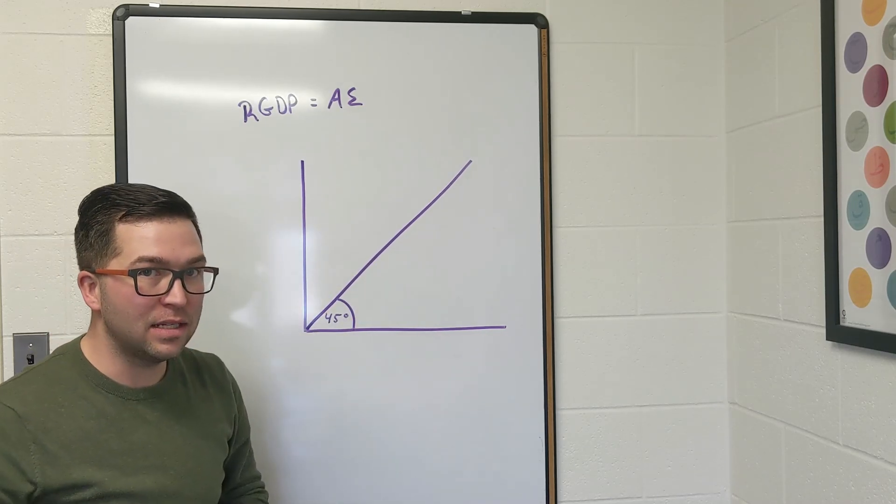As a quick review, remember the macroeconomic equilibrium is when we have real GDP equal to aggregate expenditure. The great thing about the 45-degree line is that this splits the graph in half and marks every single point where the values on your x and y axis are equal.